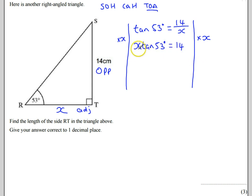I'm now going to work out what X is. I need to divide both sides by tan of 53. I'll do divide tan of 53 here. And divide by tan of 53 over here. So that tells me that X is going to be equal to 14 divided by tan of 53.